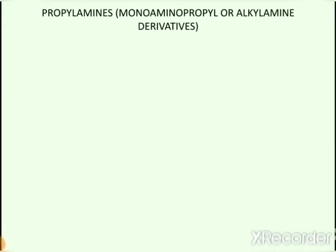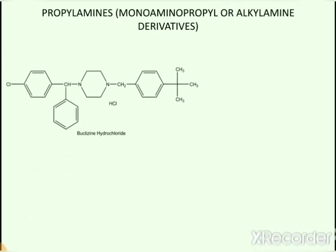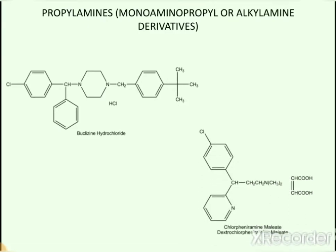The next subcategory in H1 antihistaminics includes propylamines, also known as monoaminopropyl or alkylamine derivatives. Drug candidates include buclizine hydrochloride, chlorpheniramine maleate, its stereoisomeric representative dextrochlorpheniramine maleate, triprolidine hydrochloride, and phenindamine tartrate.